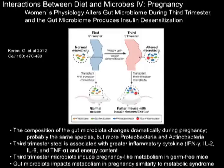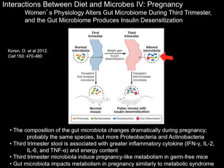Pregnancy — this is humans now. Women's physiology gets altered by the gut microbiome during the third trimester. If you take gut bacteria from pregnant women during their first trimester and give them to germ-free mice, you basically keep a normal mouse phenotype. But if you take bacteria from pregnant women at third trimester and transplant them into germ-free mice, you find greater inflammatory cytokine production. The third trimester microbes induce pregnancy-like metabolism, including metabolic syndrome, into the mice — insulin desensitization, they get fatter with a bacterial transplant.